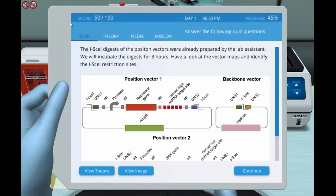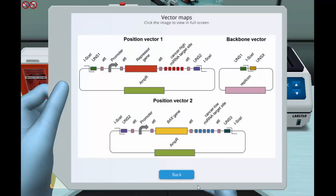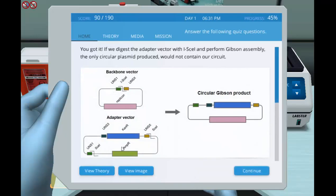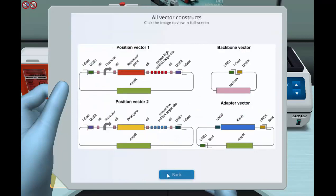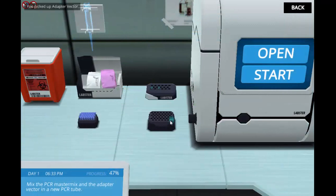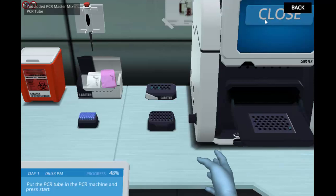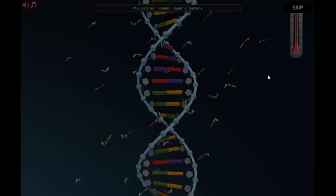Students will learn how unique nucleotide sequences in the position vectors can be used to assemble large biological circuits. They will identify the right sequences to produce the required circular plasmid. Students will also learn how to use the PCR technique to produce an additional DNA fragment that is needed for the Gibson assembly of the full circuit.